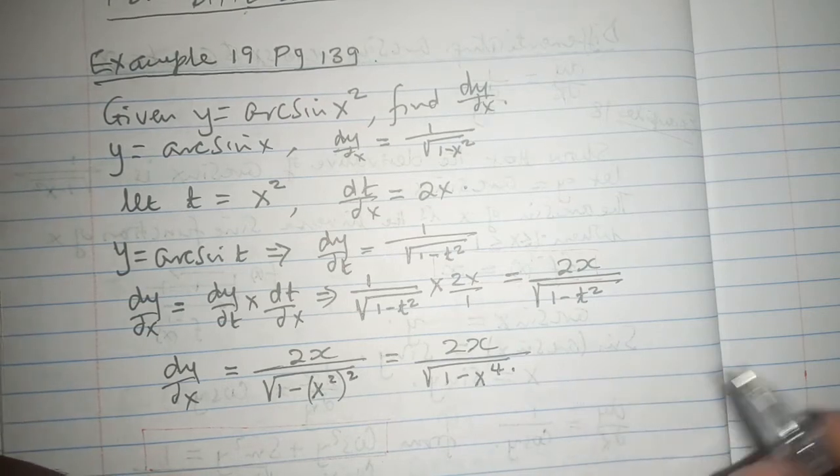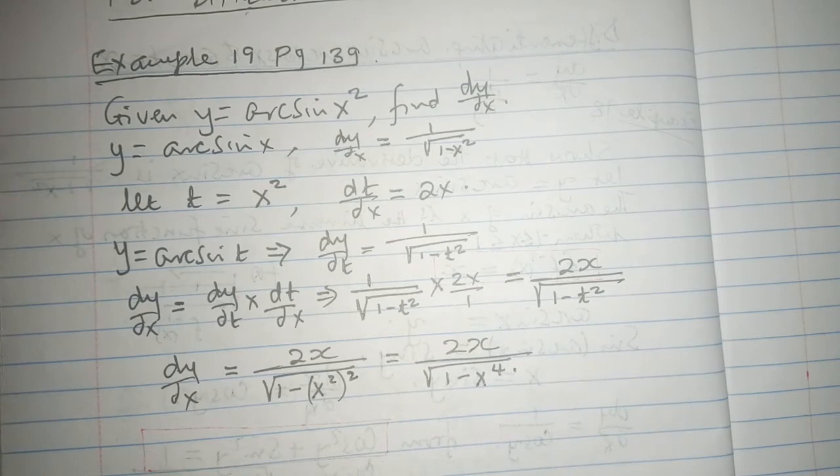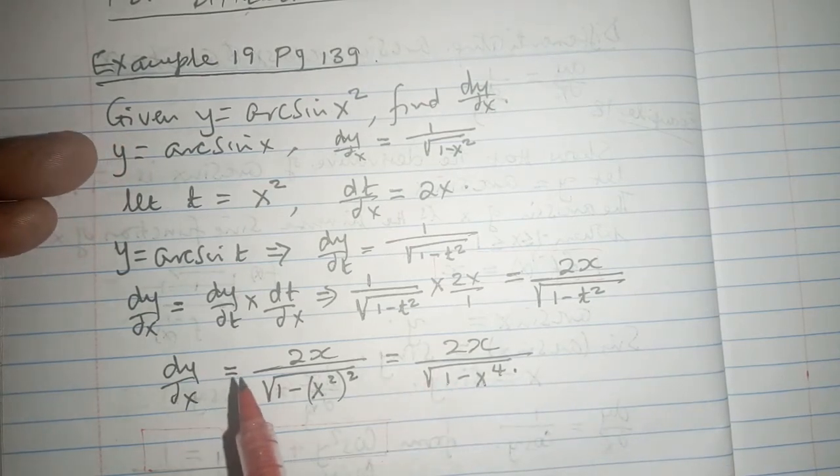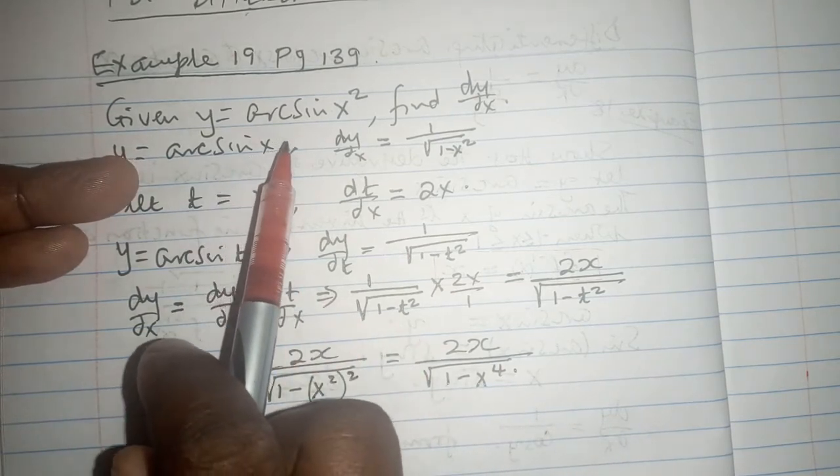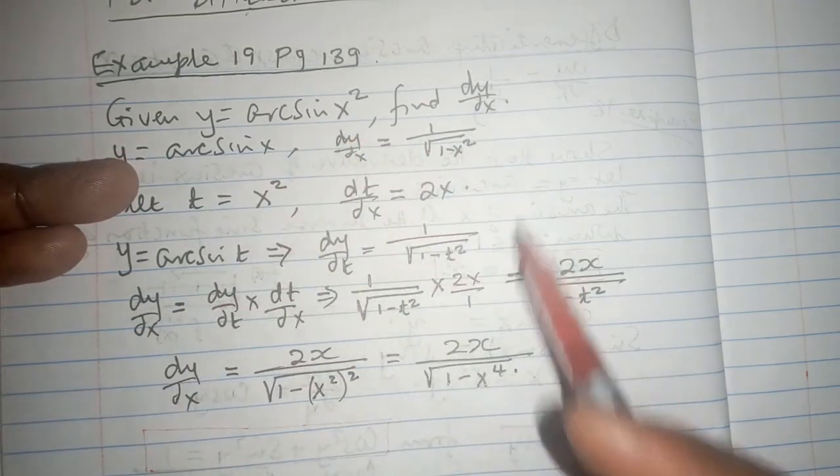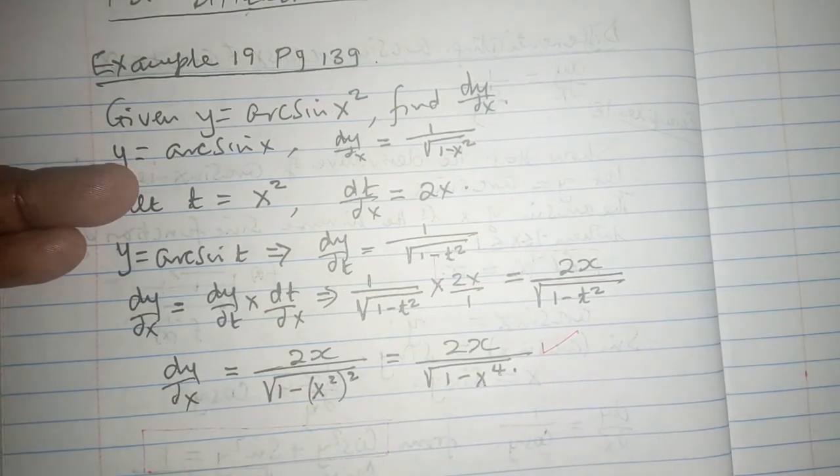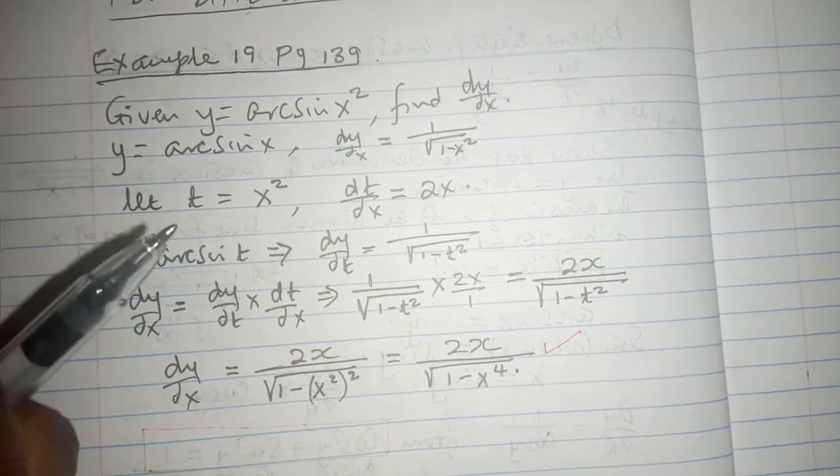And that is just like what we exactly expected to find. We have been able to establish the dy/dx if y is arc sine x squared. Then the dy/dx is 2x over the root of 1 minus x to power 4.